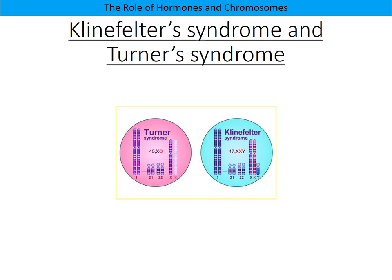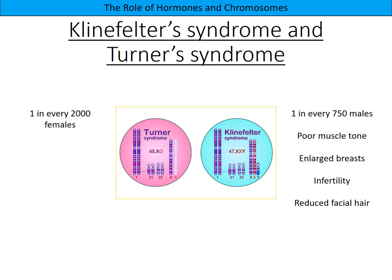Moving on to Klinefelter syndrome and Turner syndrome - it's important to know a few key characteristics. Klinefelter syndrome affects one in every 750 males due to an XXY chromosome pairing - they have an extra X chromosome. This leads to poor muscle tone, enlarged breasts, infertility, and reduced facial hair. Turner syndrome affects one in every 2000 females and involves a missing X chromosome, described as XO. Klinefelter affects males with an extra X; Turner affects females with a missing X.